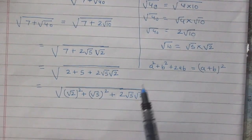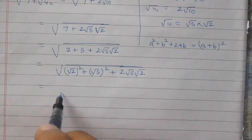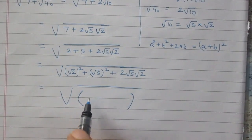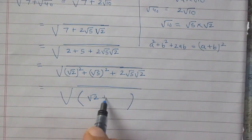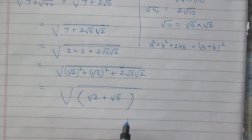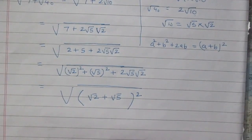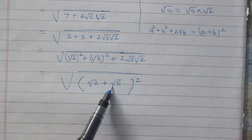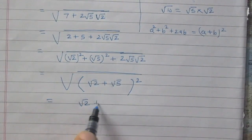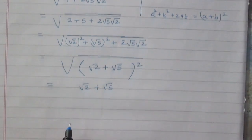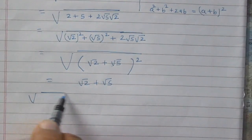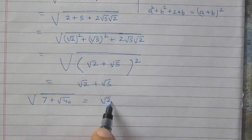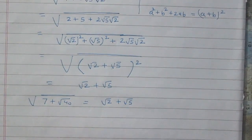So we can use this identity here and write it as square of square root 2 plus square root 5. The square root of a square gives the number itself, so it simplifies to square root 2 plus square root 5. Therefore, square root of 7 plus square root 40 is equal to square root 2 plus square root 5.